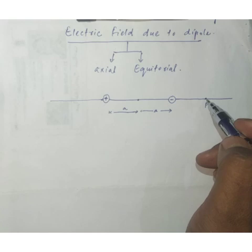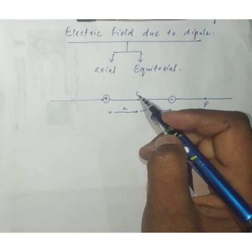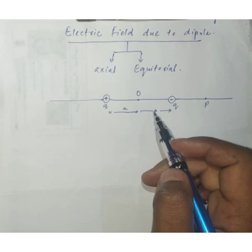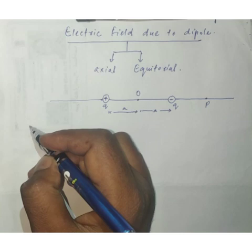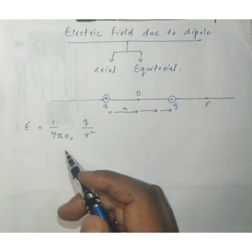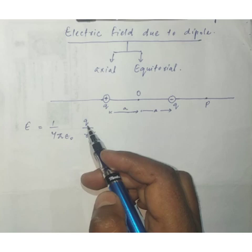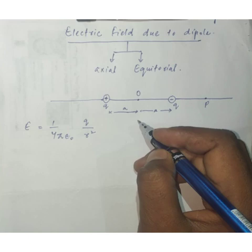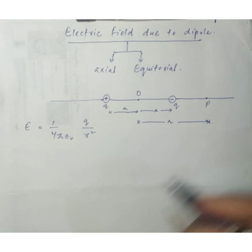We have a point P on the axial line and we have to find the electric field due to this dipole at point P. The midpoint is O. This is a plus q charge and this is a minus q charge — both equal but opposite in sign. We know the electric field due to a point charge is E = (1/4πε₀) × q/r², where q is the magnitude of charge and r is the distance from that charge. Let the distance of point P from the center of the dipole be r.